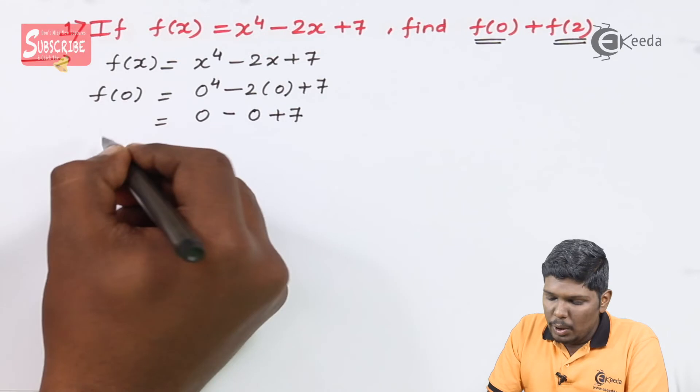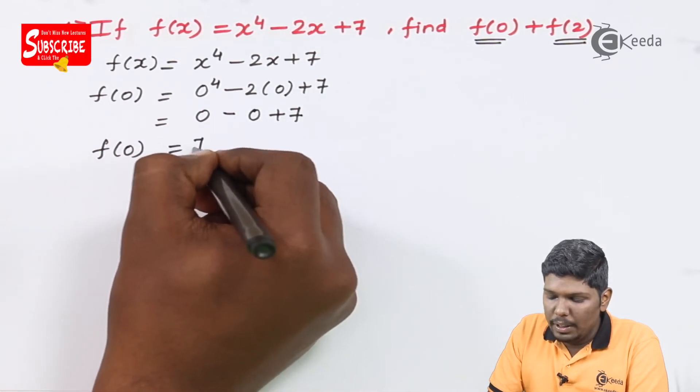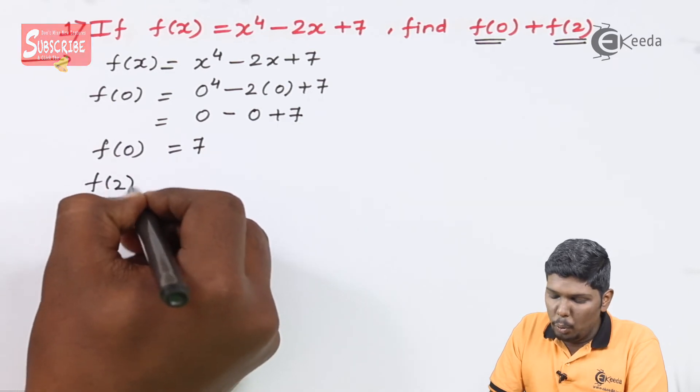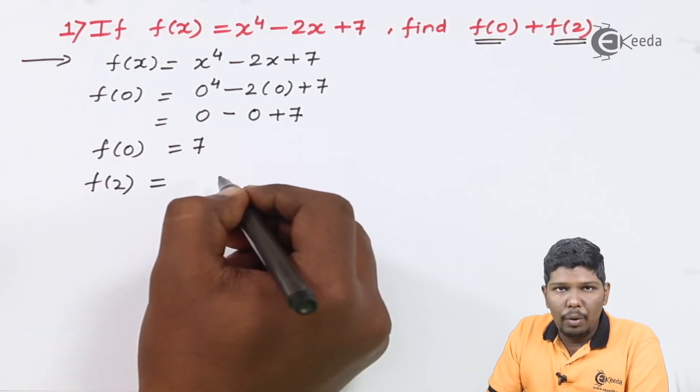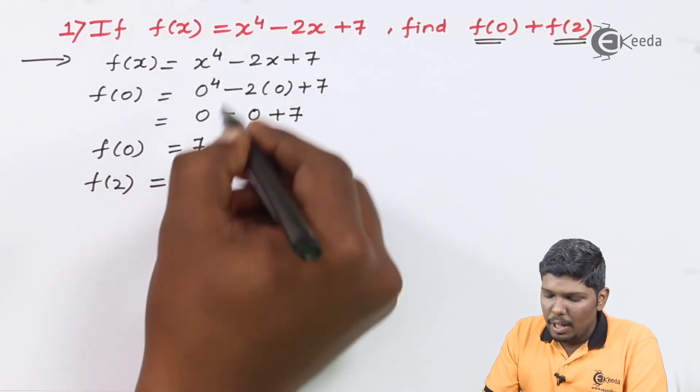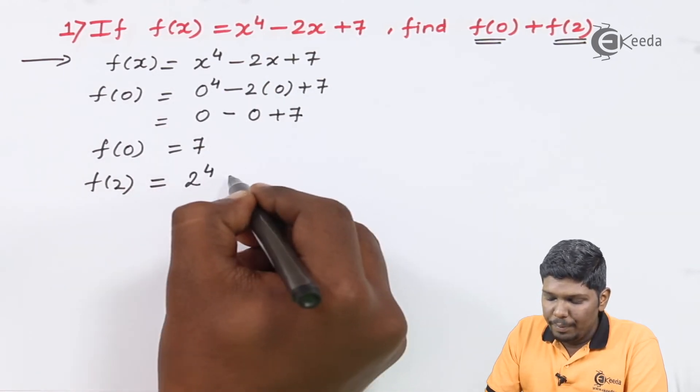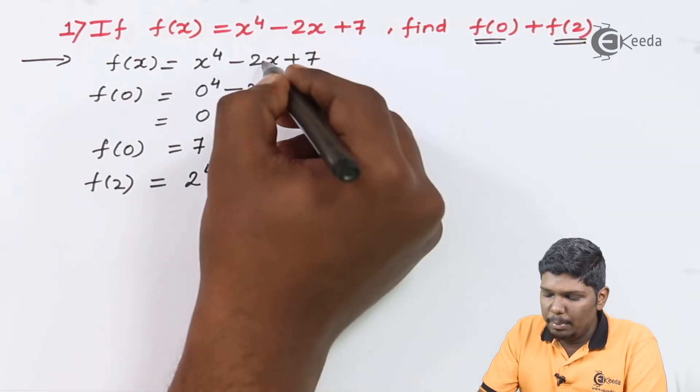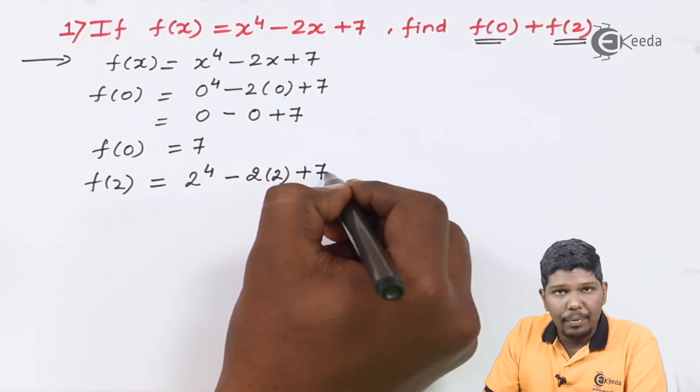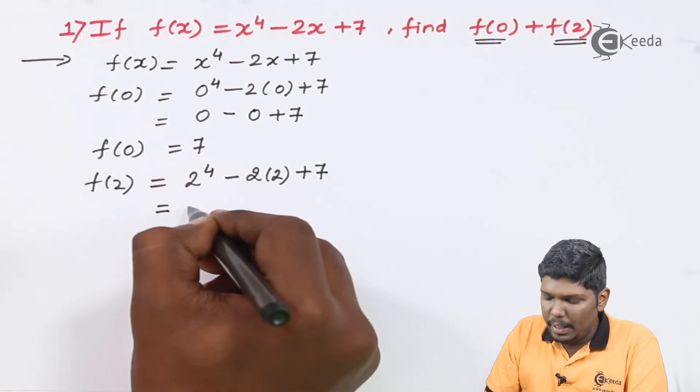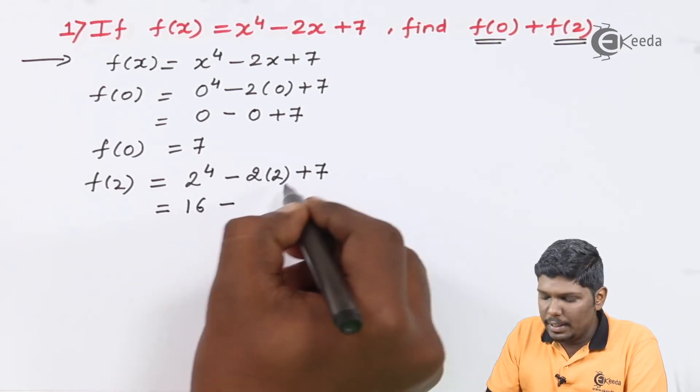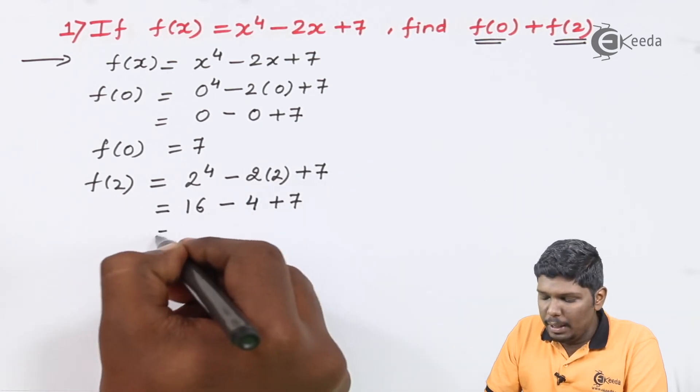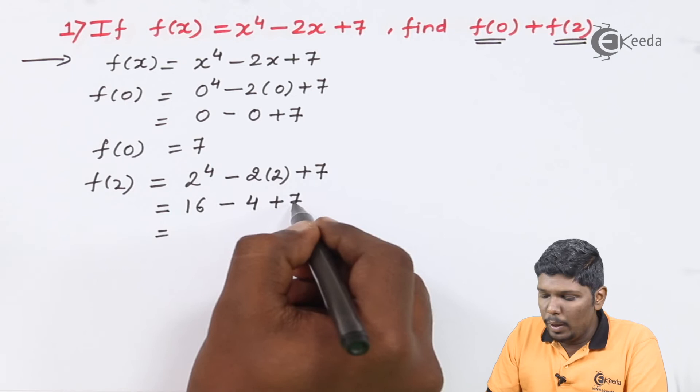Now we'll find the value of f(2). To find f(2) again x will be replaced by 2, so this becomes 2^4 - 2(2) + 7. So 2^4 becomes 16 minus 4 plus 7. 16 minus 4 is 12 and 12 plus 7 becomes 19.